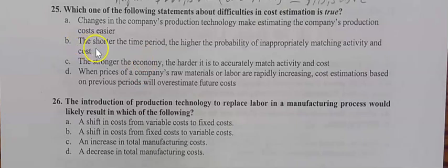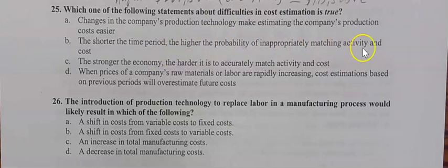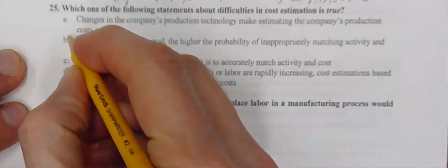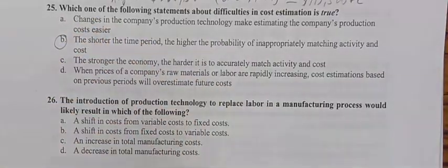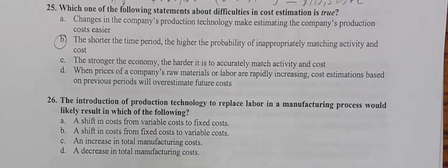Answer choice B says the shorter the time period, the higher the probability of inappropriately matching activity and cost. This is actually going to end up being the correct answer. The reason is quite simple: the shorter the time period, the less data we have, and that in itself is a valid reason.